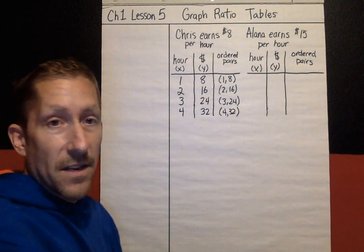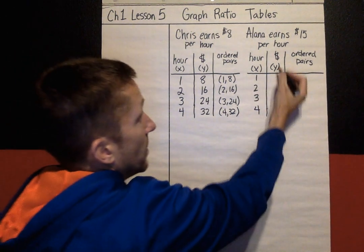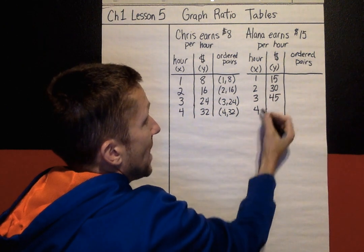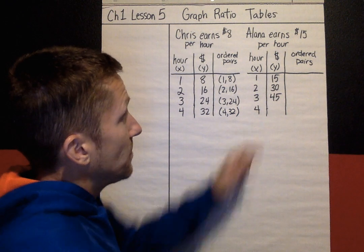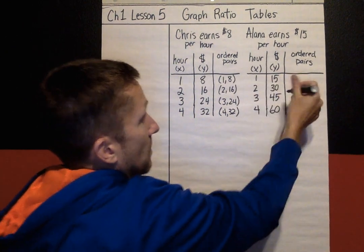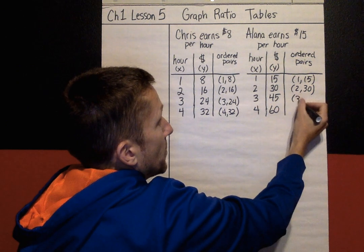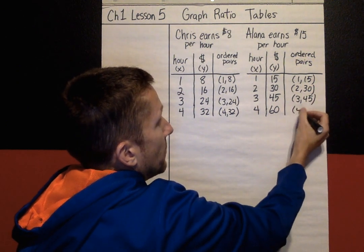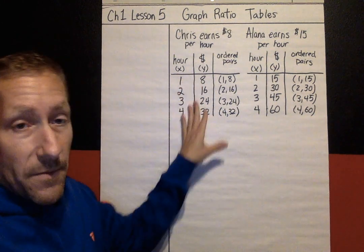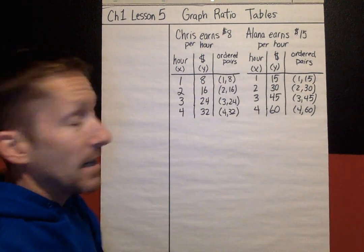Alana earns $15 per hour. Let's figure out how much she has made. After one hour, she's made $15. After two hours, $30. After three hours, $45. After four hours, she's made $60. And then her ordered pairs — that's the X value and the Y value — are (1,15), (2,30), (3,45), and (4,60). What we're adding to in today's lesson is creating ordered pairs from our X and Y values in our ratio table.